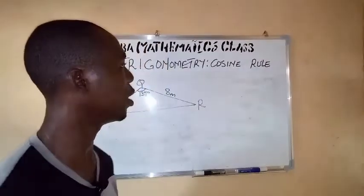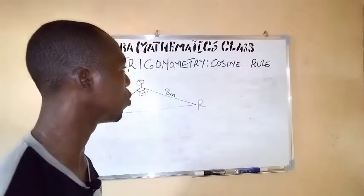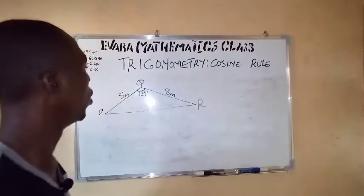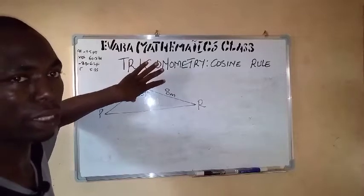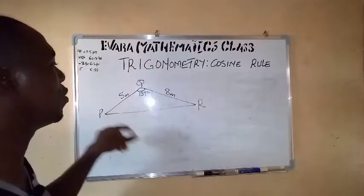Good day viewers at home. This is another example on the use of cosine rule. Here we have the triangle labeled with different letters than the A, B, C that we used in the previous example, but the formula will still be similar. It's just to rearrange. Here we are asked to